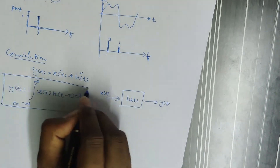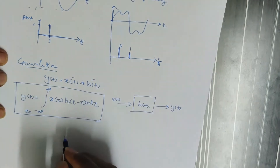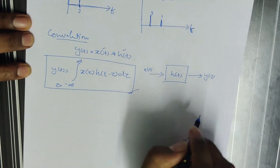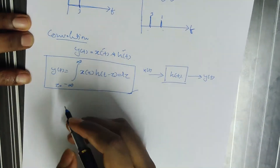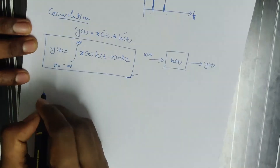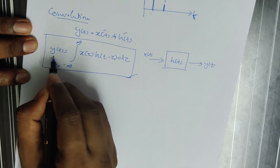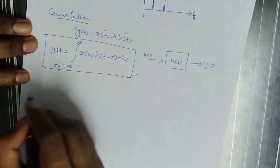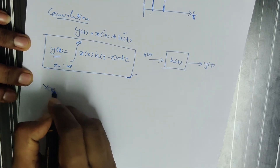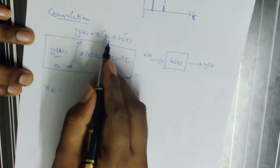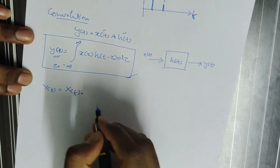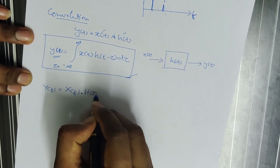In this particular equation, the convolution operation is a tedious process. So suppose if we convert y(t) into the frequency domain — since the signal y(t) is a time domain signal — if we represent it in the frequency domain, it will be y(f) equals X(f) times H(f). So convolution in the time domain becomes multiplication in the frequency domain.